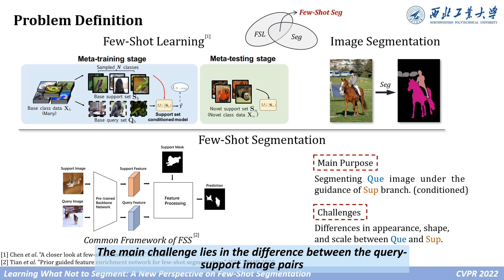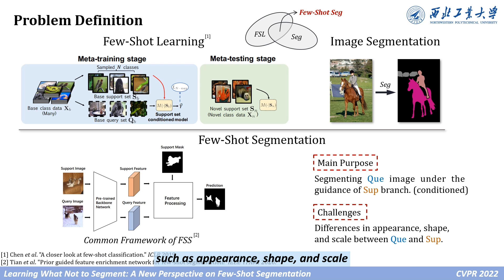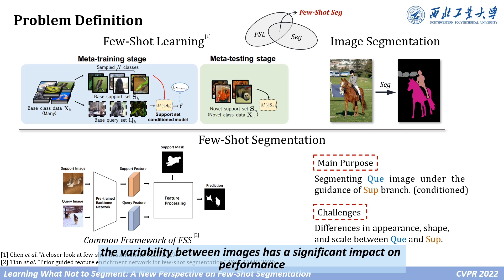The main challenge lies in the difference between the query and support image pairs, such as appearance, shape, and scale. Especially for the case with few available samples, the variability between images has a significant impact on performance.